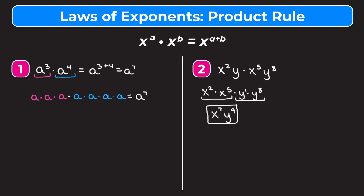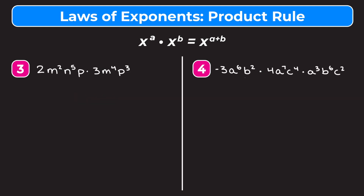Let's take a look at example three: 2m squared n to the fifth p times 3m to the fourth p to the third. I'm going to start by rearranging so everything with the same base is next to each other. I'll put the numbers in front: 2 times 3. Then the m's: m squared times m to the fourth. Then the single n term: n to the fifth. And then the p's: p and p to the third.